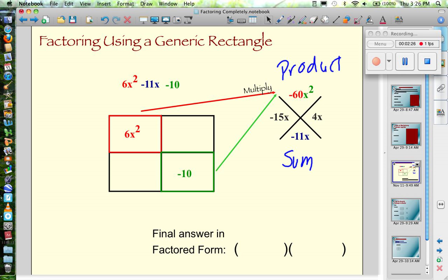Now I know what goes in the two missing boxes. It doesn't matter where I put them. So it doesn't matter if I had switched around the 4x and the negative 15x. Great. Now I've got the inside of my box filled out.